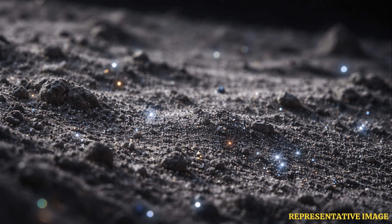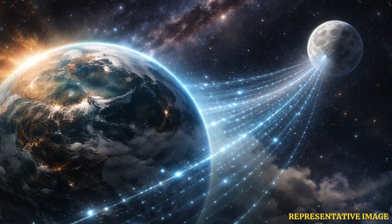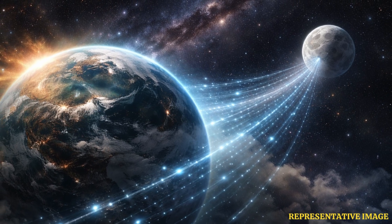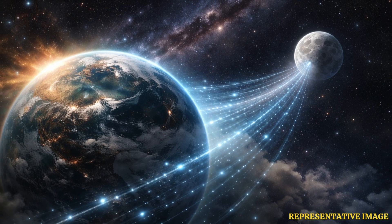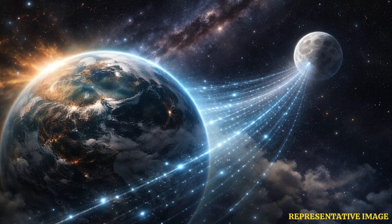This tail of Earth points away from the Sun and extends at least 2 million kilometers into space. Instead of blocking the ions from leaving Earth, the magnetic field lines acted as an invisible path for the particles.